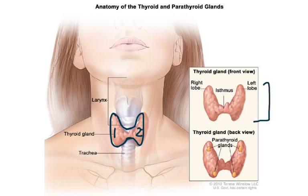At the back of the thyroid gland, there are four small glands which are called parathyroid glands. We will not discuss these glands in this lecture — we'll have a separate lecture on them.